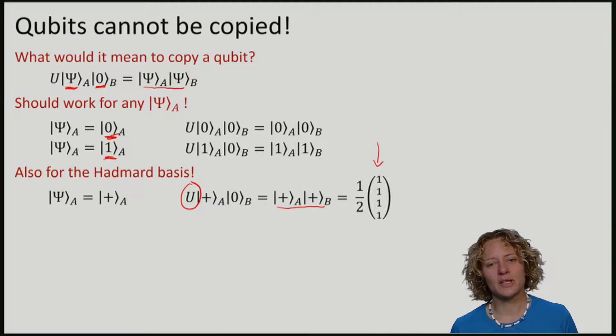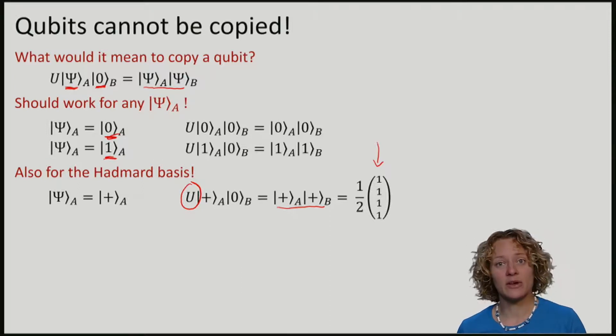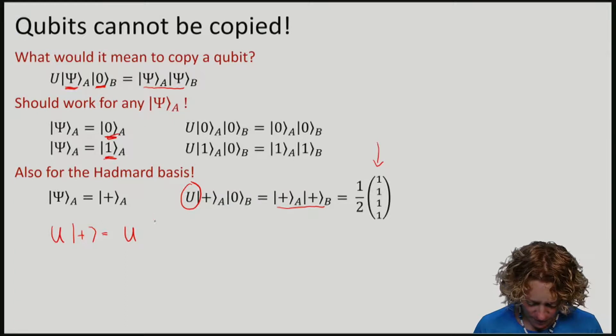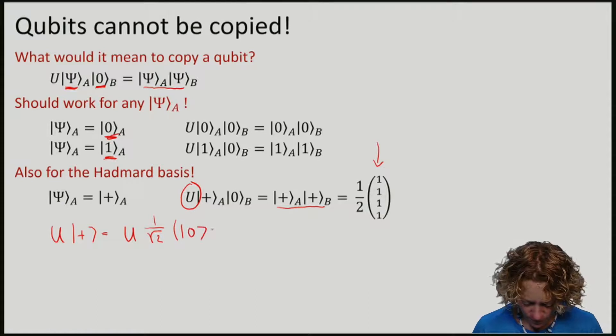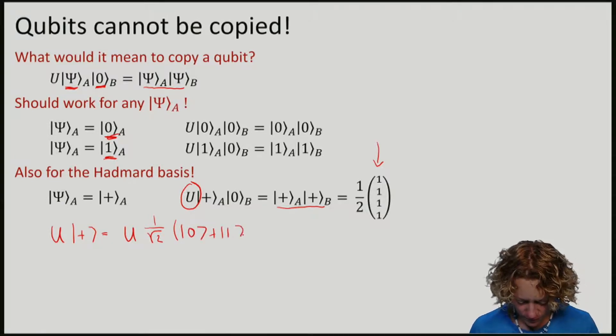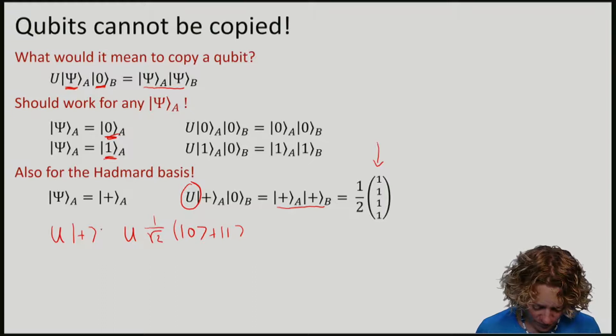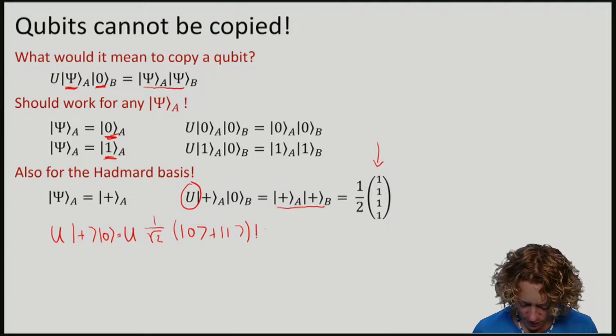Let's now see what happens if we compute the action of U on the |+⟩ state in another way, namely by first expanding the |+⟩ state. Remember that the |+⟩ state is just a superposition between |0⟩ and |1⟩. So if we apply U to |+⟩|0⟩...